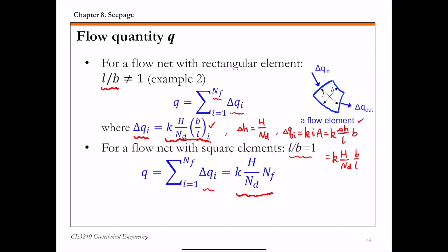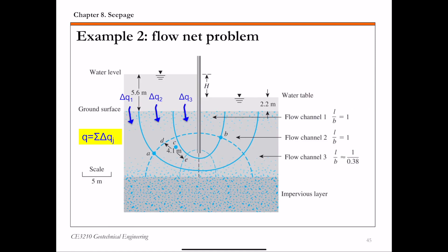Back to example two — this is a case where not all elements are square, so you have rectangular elements in flow channel three. Looking at the figure, there are three flow channels. Flow channel three has some rectangular elements, so we use the first scenario: calculate delta q for each flow channel and then sum them up.